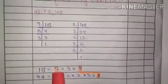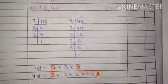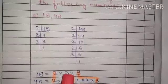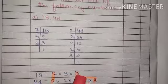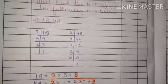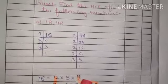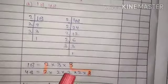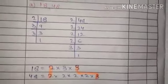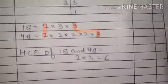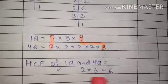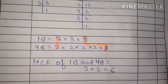Now you will see first 2 is common. So, 2 and 3 are common. So, the HCF of 18 and 48 is 2 times 3, 6. So, 2 times 3, 6 is the answer of 18 and 48.